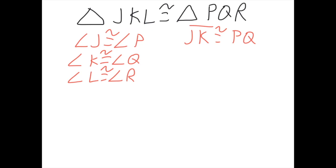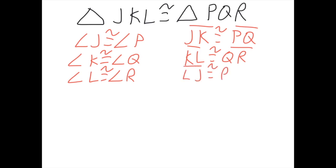Then KL are next to each other and QR are in the same order. So, side KL is congruent to side QR. Now for the last one — they're not next to each other, but they're both on the ends. So, the last letter then the first: side LJ is congruent to side RP.